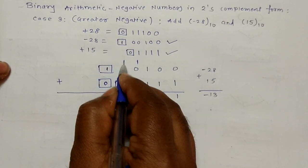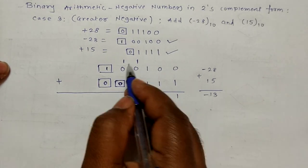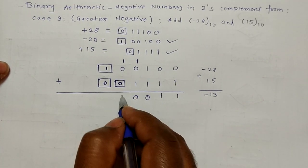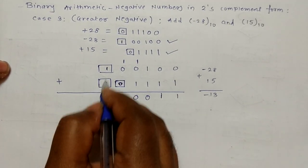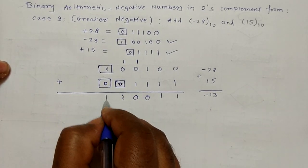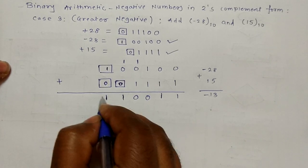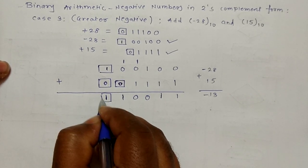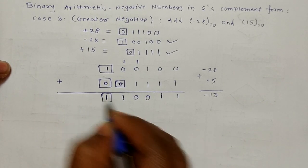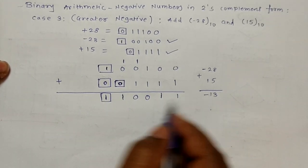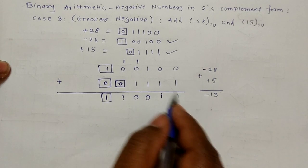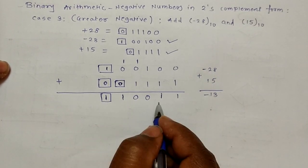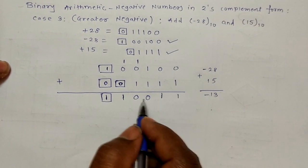Continuing: 1 plus 0 plus 0 is 1; 1 plus 0 is 1. Remember this last bit is the sign bit of the result — the sign bit is 1, so the number is negative. This result is minus 13, which is exactly what we expected.